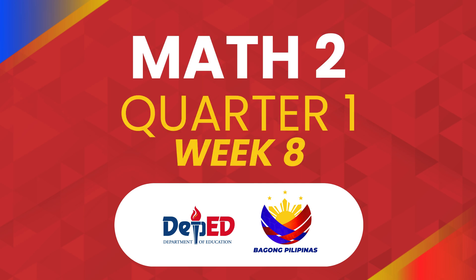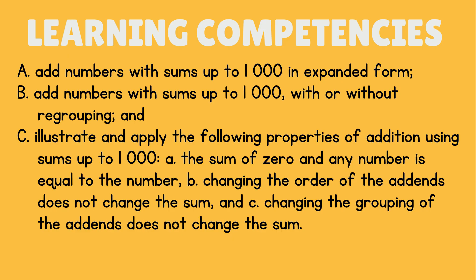Math 2, Quarter 1, Week 8. Learning competencies: A. Add numbers with sums up to 1000 in expanded form; B. Add numbers with sums up to 1000 with or without regrouping; and C. Illustrate and apply the following properties of addition using sums up to 1000.